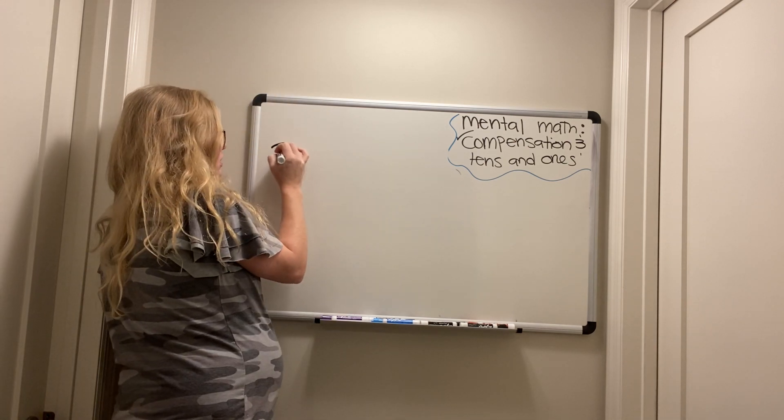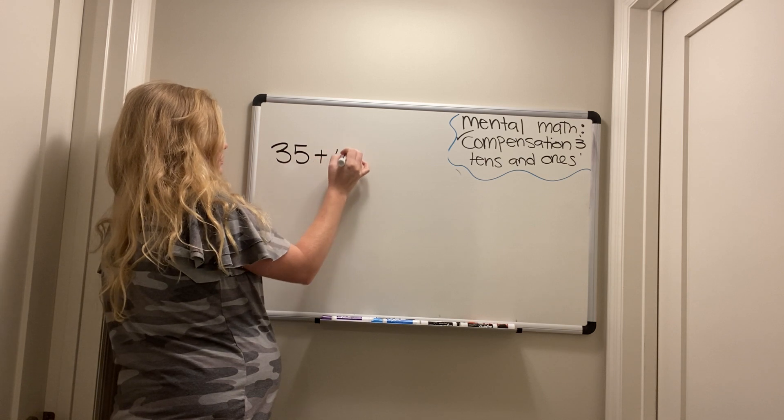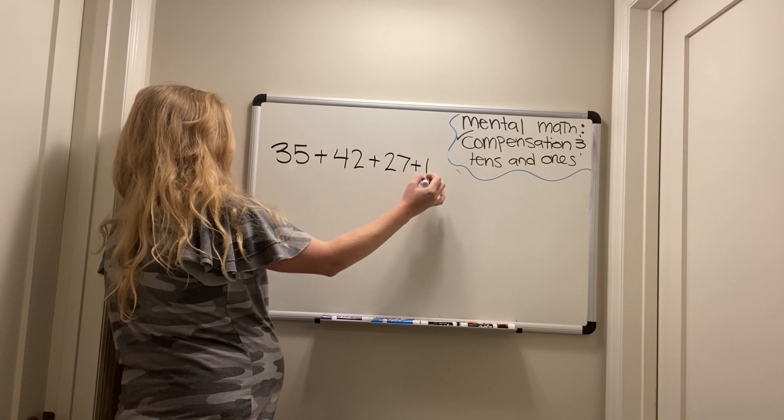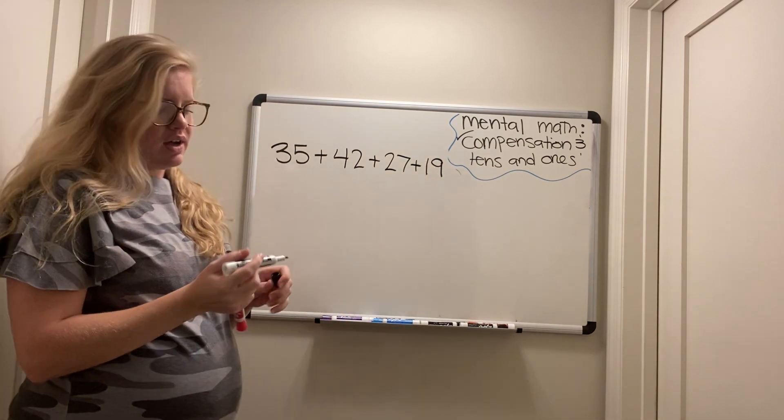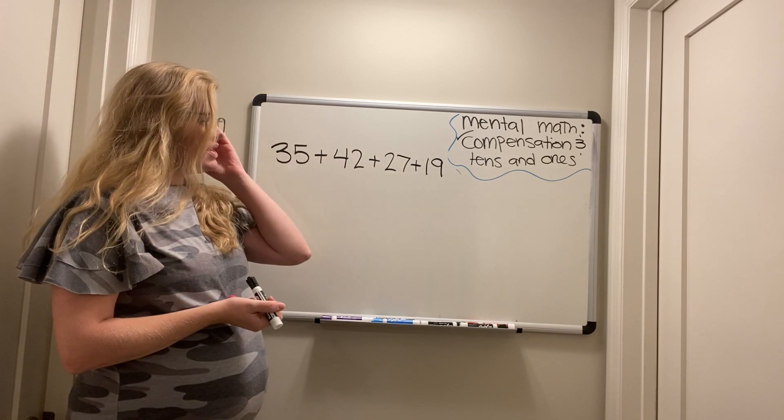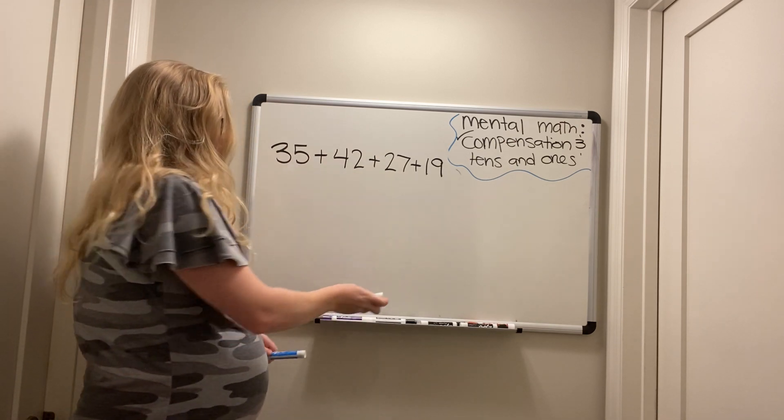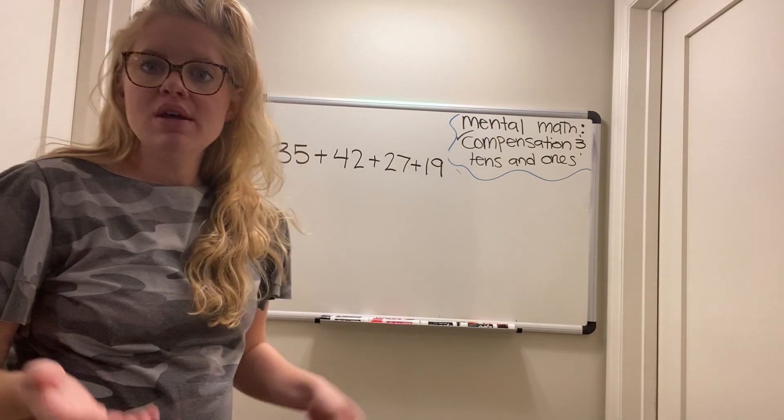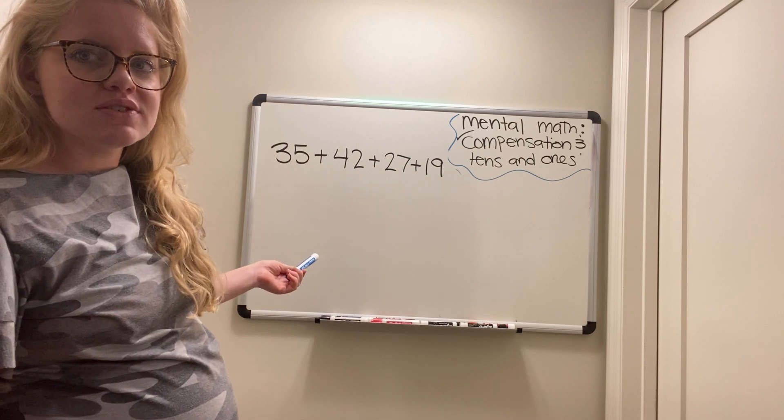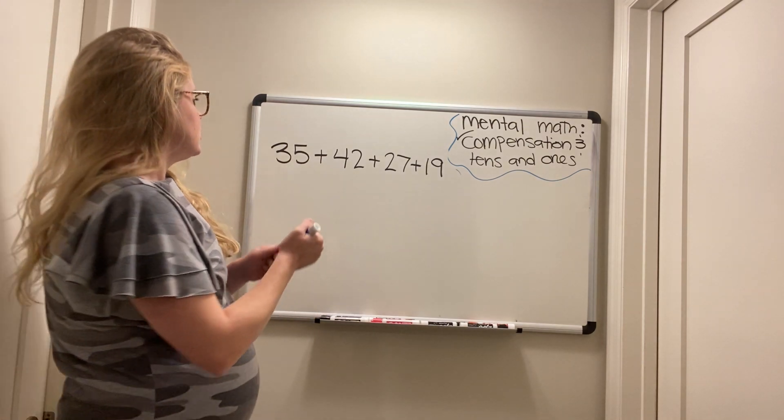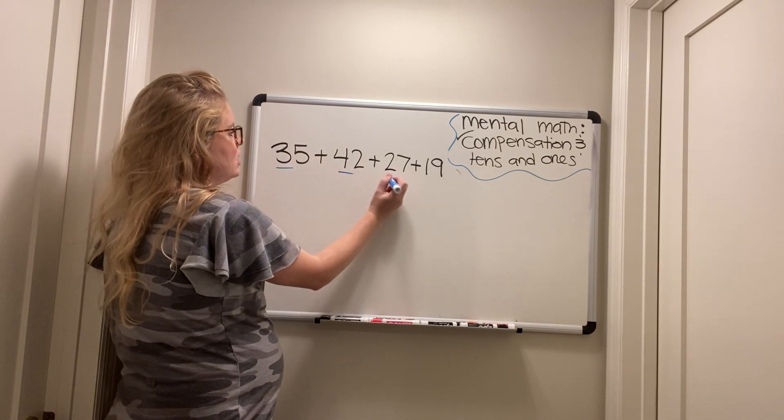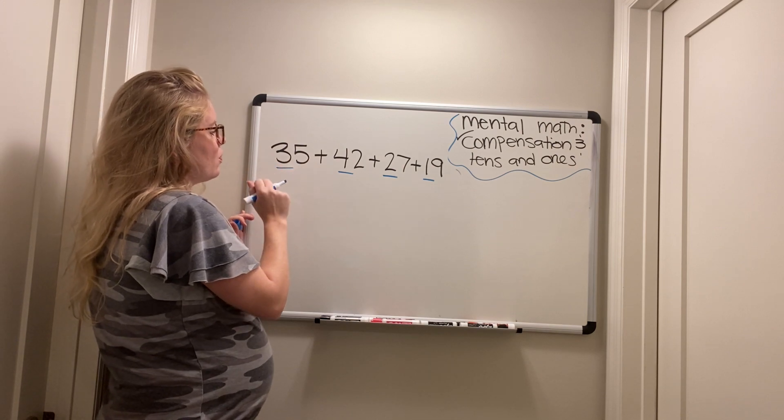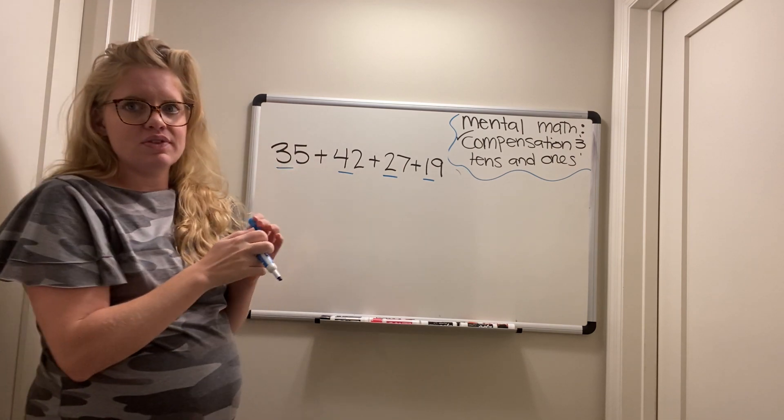Okay. 35 plus 42 plus 27 plus 19. Remember tens and ones. So first we're going to add the tens and I want you to help me out at home. Be paying attention, but also be calling out the answers to the questions that I ask you. Let's start with the tens. We have a 30, 40, 20, and a 10. So we're just going to say three tens though, instead of the actual number.